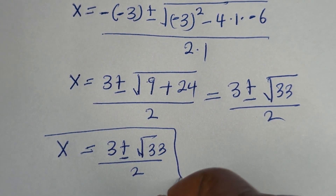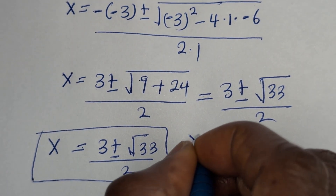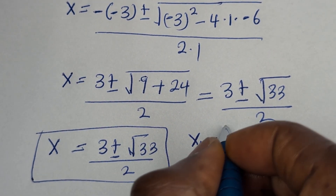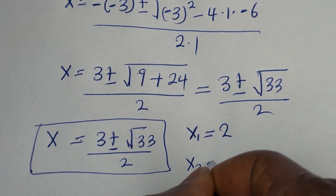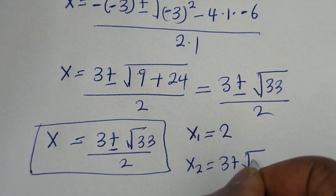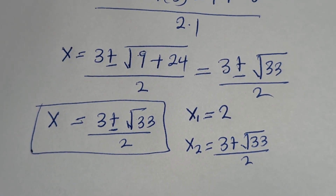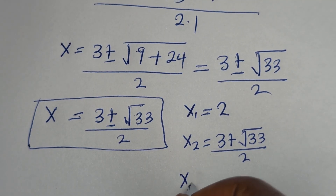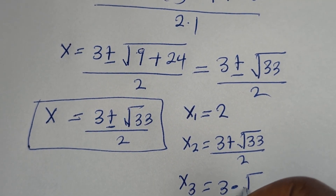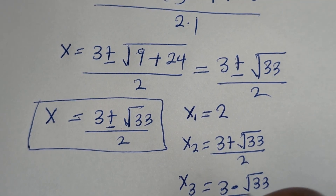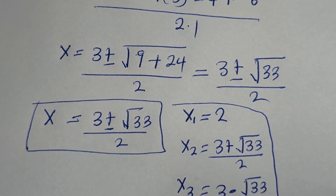These are the other values of s. Therefore our final answers are: s1 equals 2, s2 equals 3 plus square root of 33 over 2, and s3 equals 3 minus square root of 33 over 2. These are the final answers.